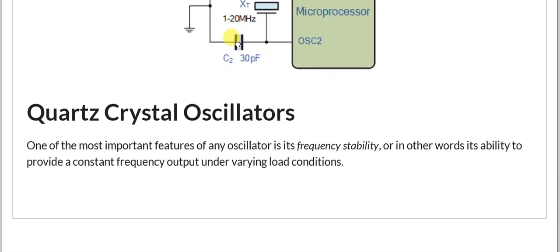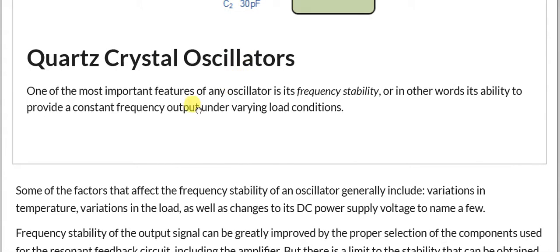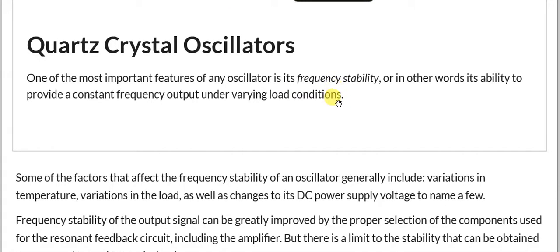The quartz crystal oscillator — one of the most important features of any oscillator is its frequency stability, meaning its ability to provide a constant frequency output under varying load conditions. Any variable load may affect the frequency, so the prime feature of the oscillator is that it must be able to provide a stable, constant frequency.